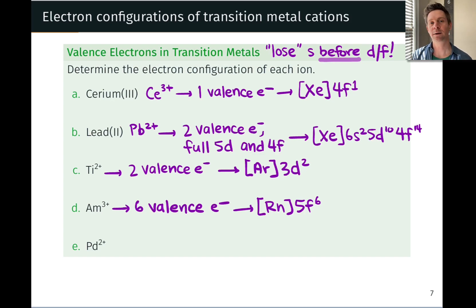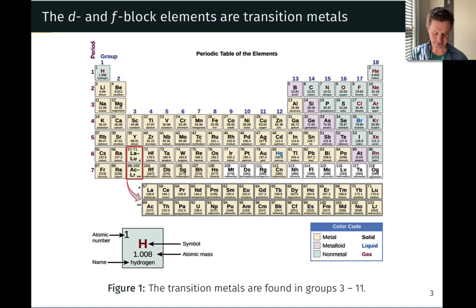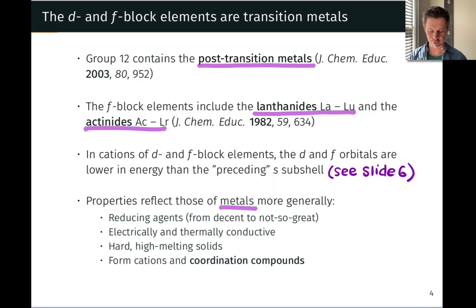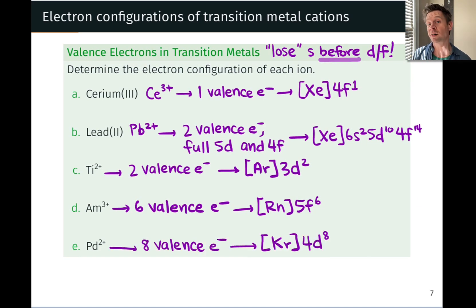Finally, palladium 2+. Palladium is a transition metal in the second row of the transition series. When neutral it has 10 valence electrons. As a 2+ cation it has eight. Those eight electrons are all found in the 4D subshell, so the configuration is [Kr]4d⁸.